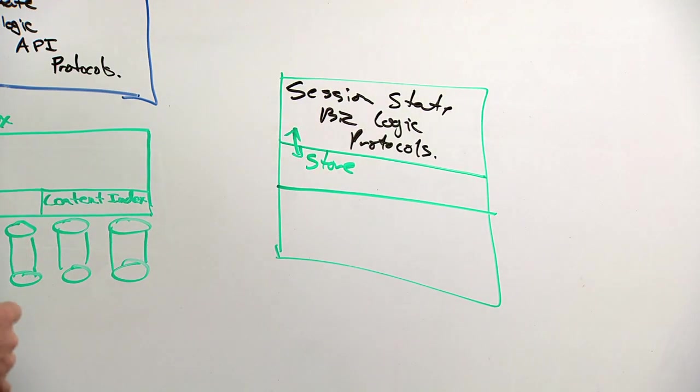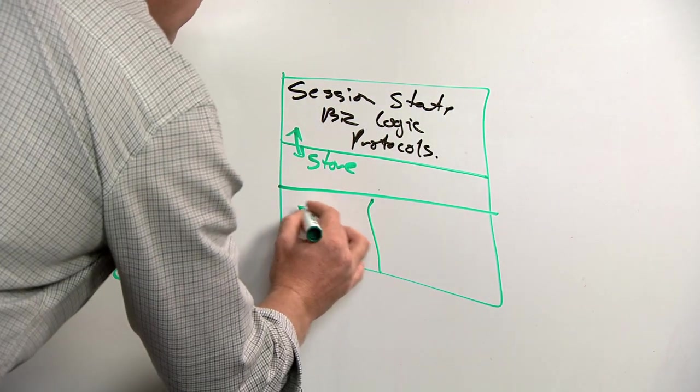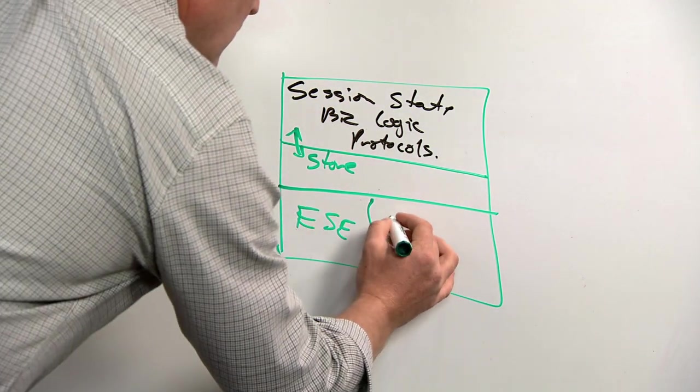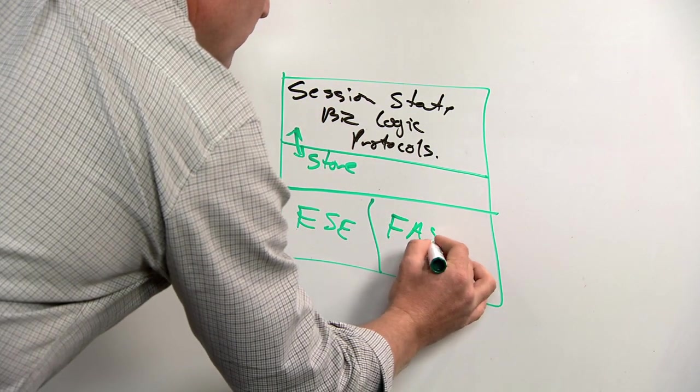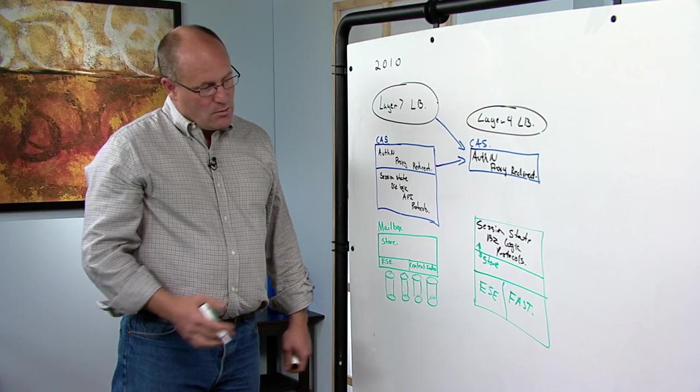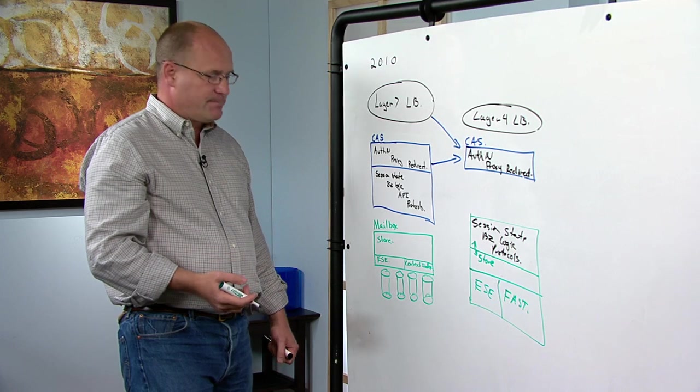Managed store process. And that gave us a few important wins. We still got our core store engine, and we also introduced fast technology as our content index engine. In the rewrite of the store, we got several big wins. One is, we got another 4x reduction in the I/O per user operation.